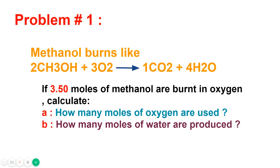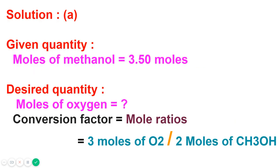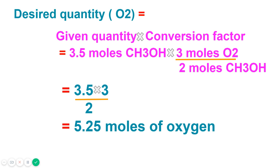Problem number one: methanol burns according to the equation where two moles of methanol react with three moles of oxygen and produce one mole of carbon dioxide and four moles of water. If 3.5 moles of methanol are burned in oxygen, calculate (a) how many moles of oxygen are used and (b) how many moles of water are produced. The given quantity is 3.5 moles of methanol; the desired quantity is moles of oxygen. The conversion factor (mole ratio) is 3 moles of oxygen over 2 moles of methanol.